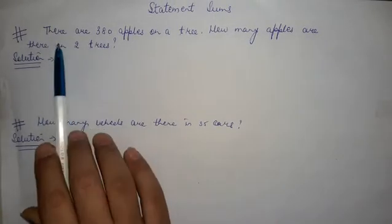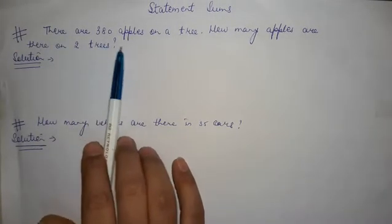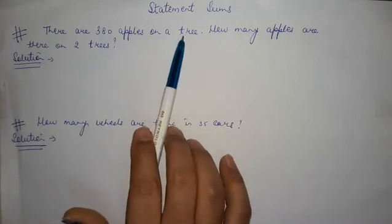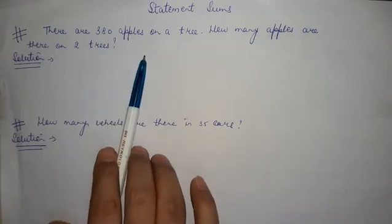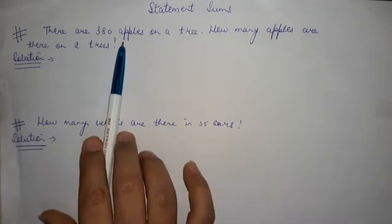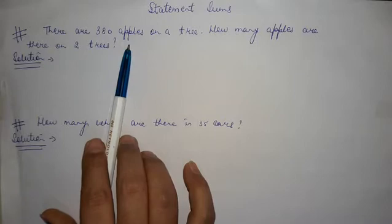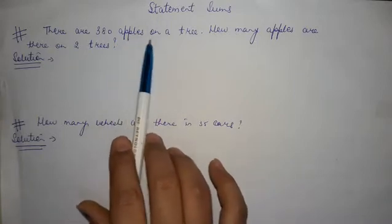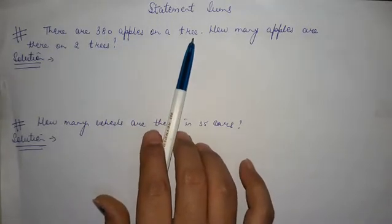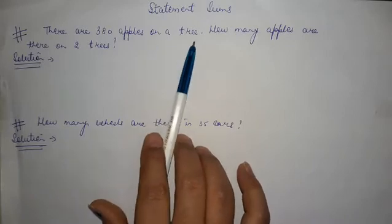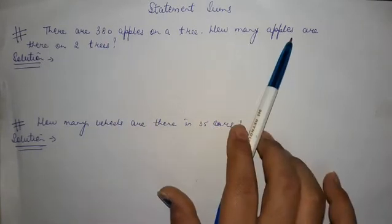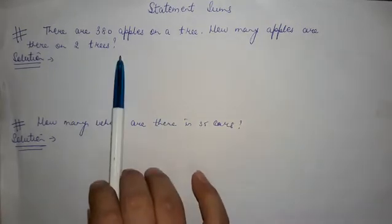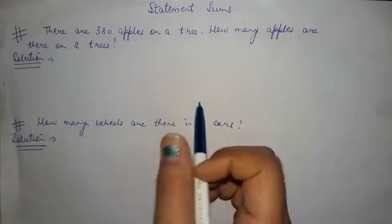First is there are 380 apples on a tree. How many apples are there on two trees? So total number of apples are given, 380, and it is given on one single tree. That means on one tree we have 380 apples. We need to find how many apples are there on two trees. So what we will write,